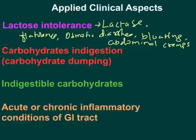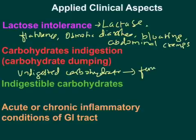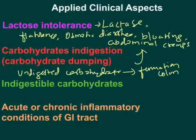As we age from infancy through adulthood, lactase expression on the brush border epithelium decreases. Another clinical aspect is carbohydrate dumping — eating too much carbohydrate in too short a time means carbohydrates are not digested properly in the small intestine. The undigested carbohydrates pass into the colon, where colonic bacteria ferment them, causing flatulence, osmotic diarrhea, bloating, and abdominal cramps.